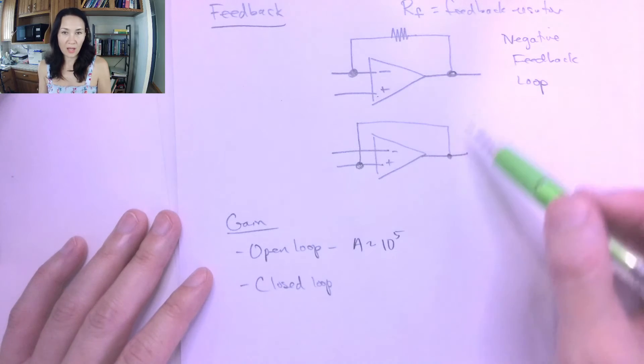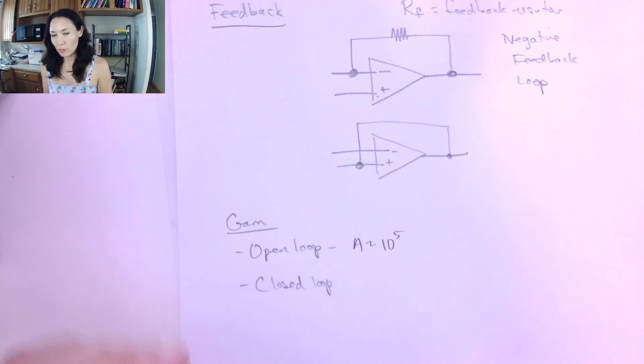Basically, if we connect it in a circuit without any kind of feedback loop, and some problems, we will be given some inputs and the open loop gain, and we have to determine the output.